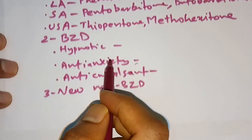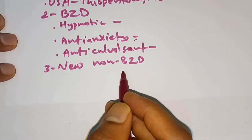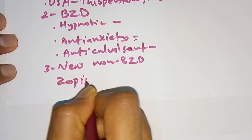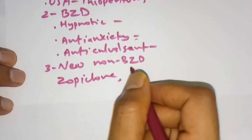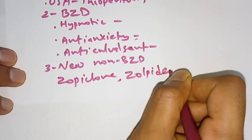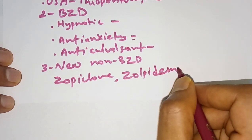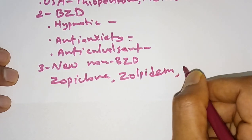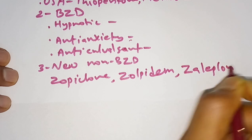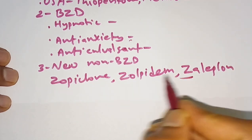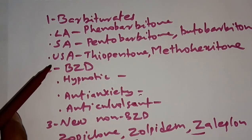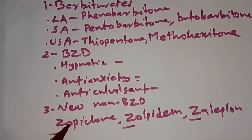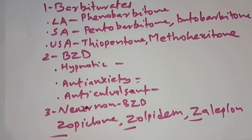Newer non-benzodiazepine hypnotics include zopiclone, zolpidem, and zaleplon. They may ask in the question paper about the use of zopiclone or zolpidem — you have to remember these are used as hypnotics, specifically newer non-benzodiazepine hypnotics. All three names start with the letter Z. This completes the main classification of hypnotics: barbiturates, benzodiazepines, and newer non-benzodiazepines.